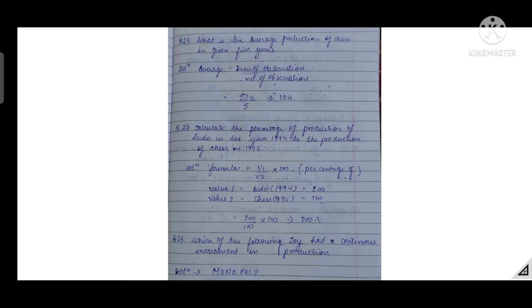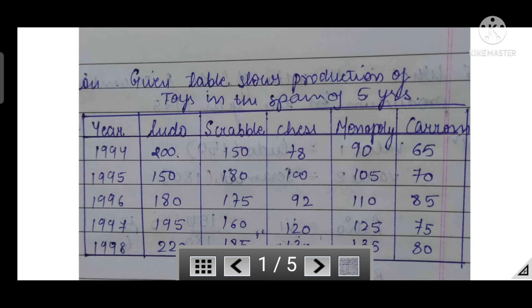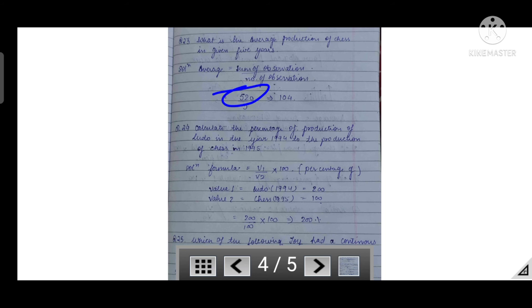The third question: what is the average production of chess in the given five years? In DI we get very easy questions. The language is very easy, you just have to understand the question and do the solution, and that is when you remember the formula. So make sure you learn the formula nicely. Here, you have asked the test five year average, so we just take the sum of all five observations and in the denominator take 5. The total was 520, in denominator 5, so we get the answer: 104.